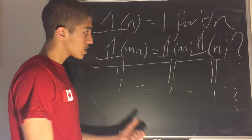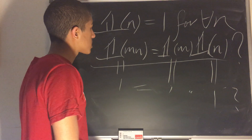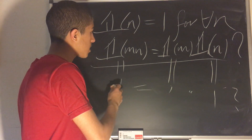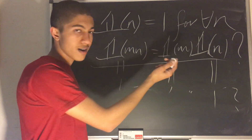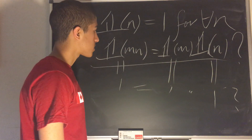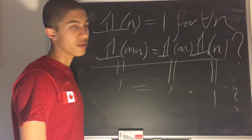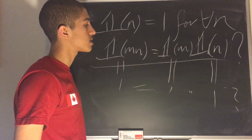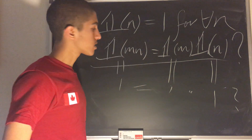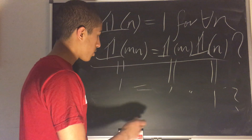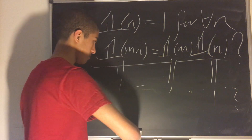But is boldface 1 completely multiplicative? Well, yes, of course. Because even if m and n are not coprime — for example, if m equals n — this still holds for any m and n. So boldface 1 is both multiplicative and completely multiplicative.